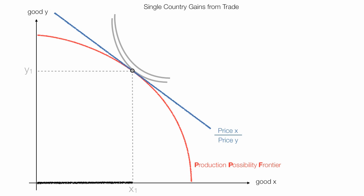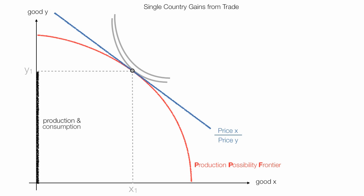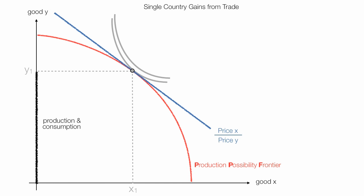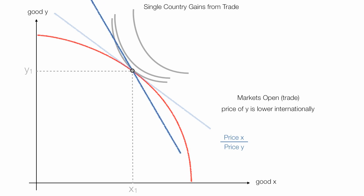The country's level of production and consumption is marked by that black line. It consumes everything it produces of good Y. Let's imagine now that the country's markets open up to trade, and the price of Y is lower internationally — we'll see that blue line rotate. Now, the level of consumption is marked by that green line, and the level of production is at that point right there.